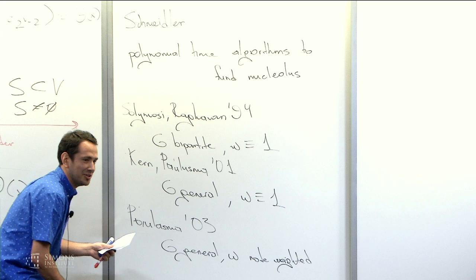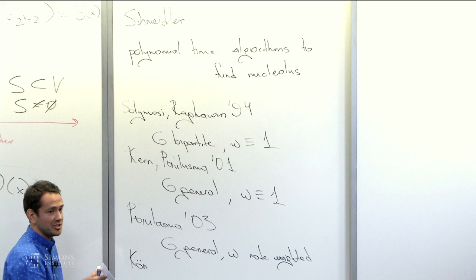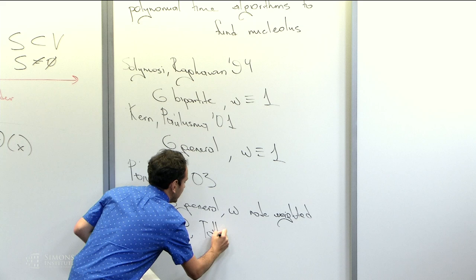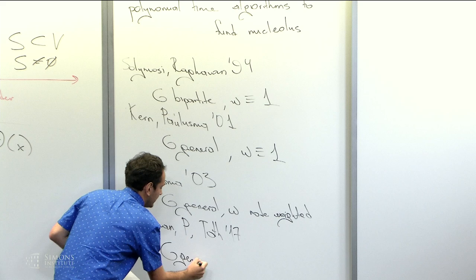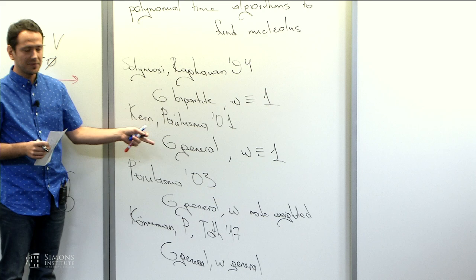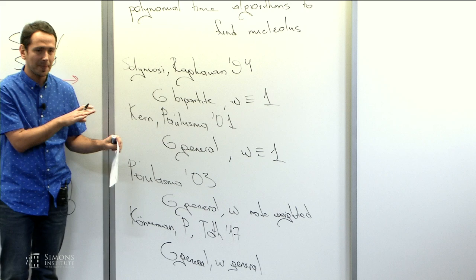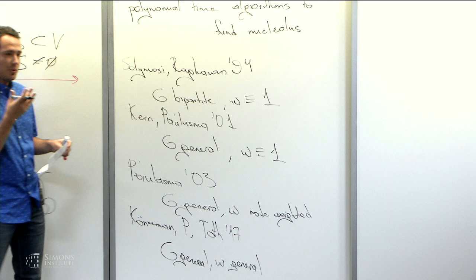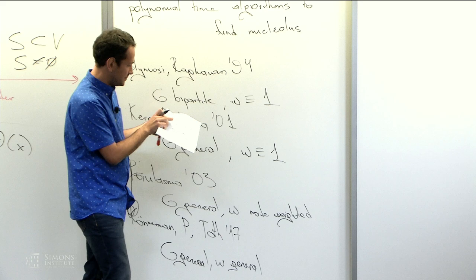We showed that we can handle G general and W general — and that's what my talk is about. First of all, I should say: we do not use extended formulations, but we do have a compact description of some polytopes. We don't use additional variables; we really need the polyhedral structure.